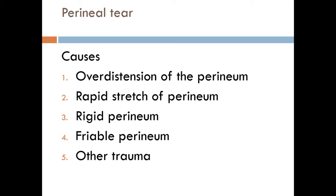Other types of trauma can lead to perineal tear, such as falling on a hard object, car accidents, and defloration injury, which is injury caused by intercourse.